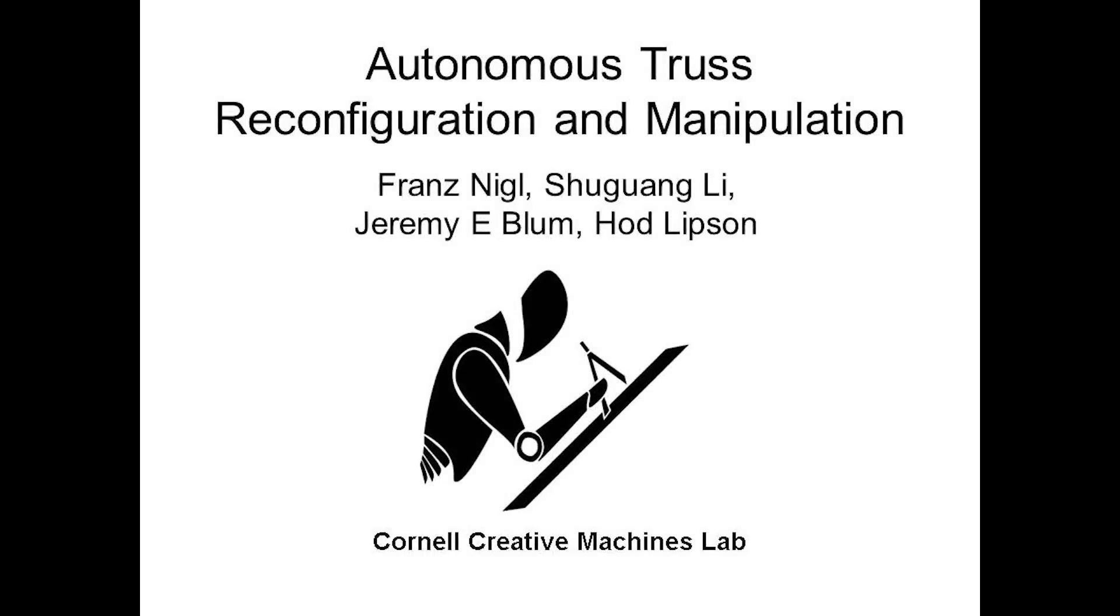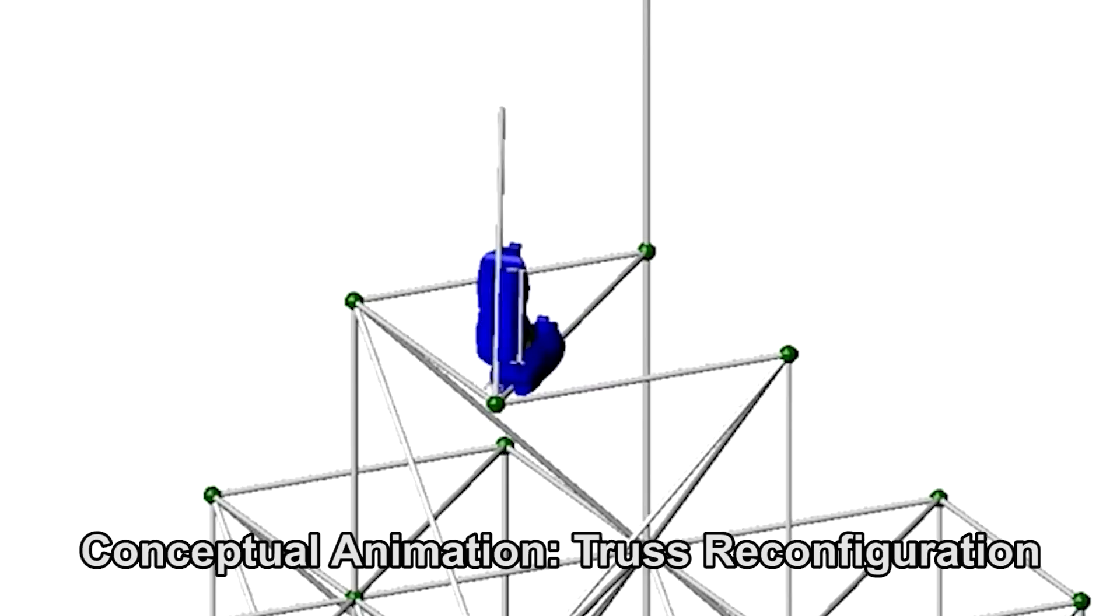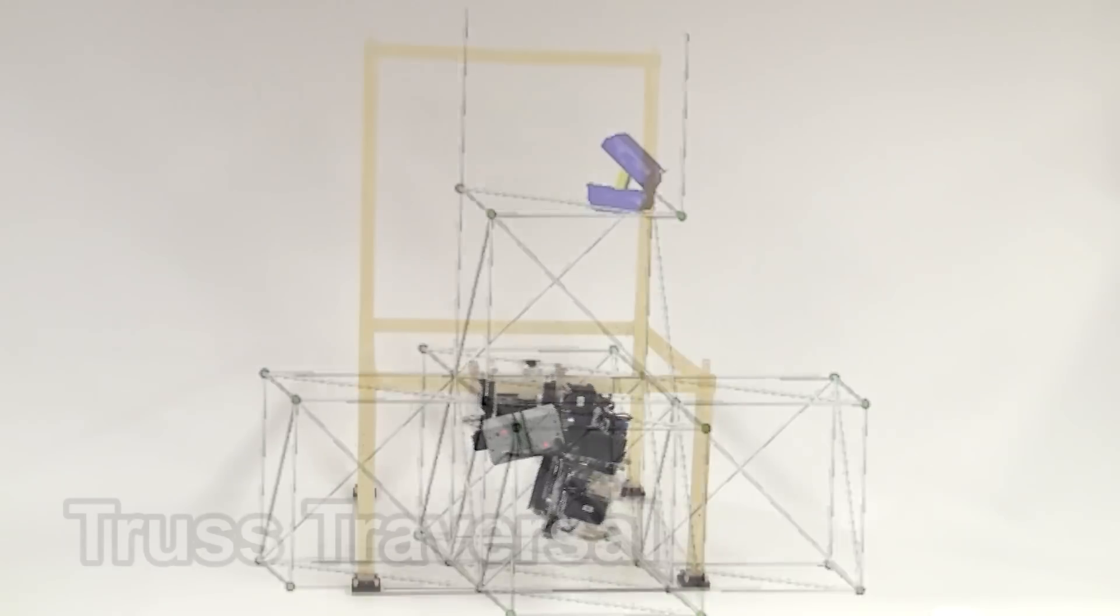The following video is a demonstration of a truss structure modifying robot developed at Cornell's Computational Synthesis Lab. The robot is designed to remove truss components from one end of a truss structure and move them to another, allowing it to reconfigure the original structure into an entirely new shape.